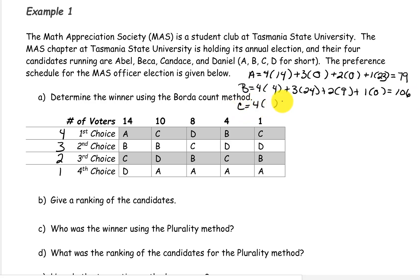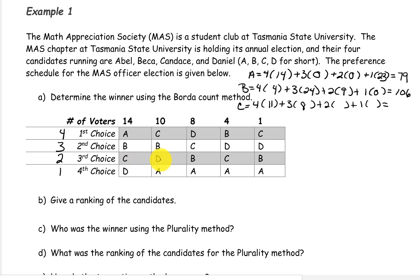Candidate C was first choice on 11 ballots, they were second choice on 8 ballots, they were third choice on 14 and 4, so 18 ballots, and they were not last place on any of the ballots. 4 times 11 plus 3 times 8 plus 2 times 18 plus 1 times 0 gives you a total of 104.